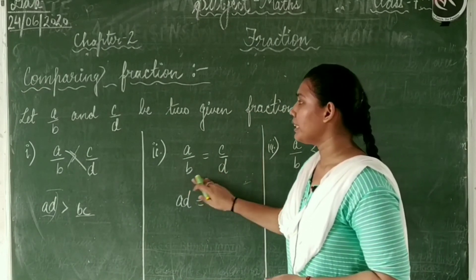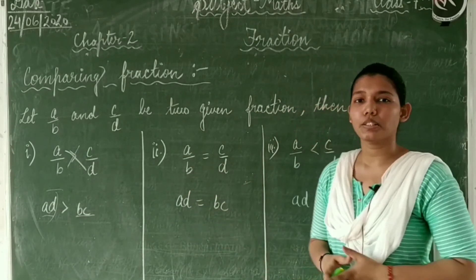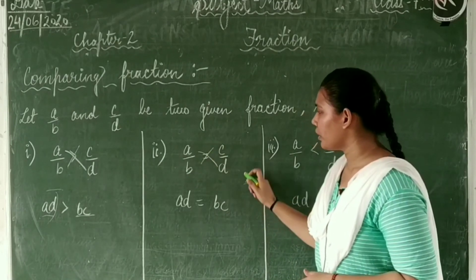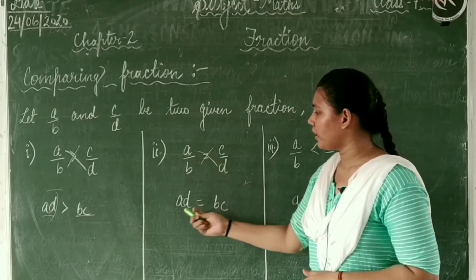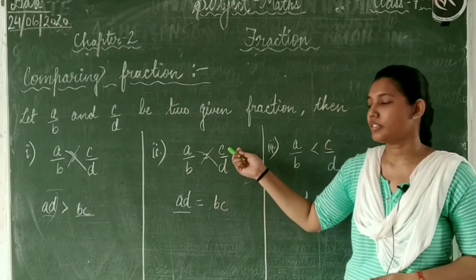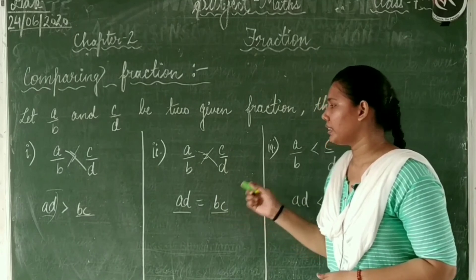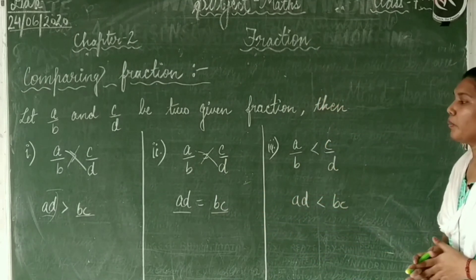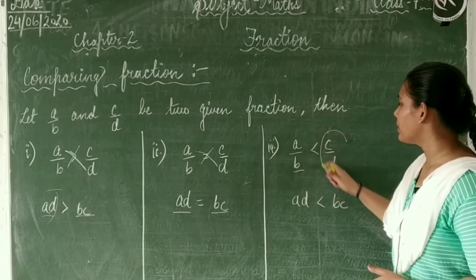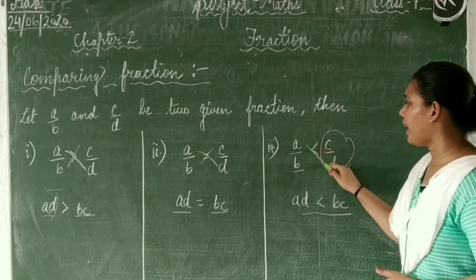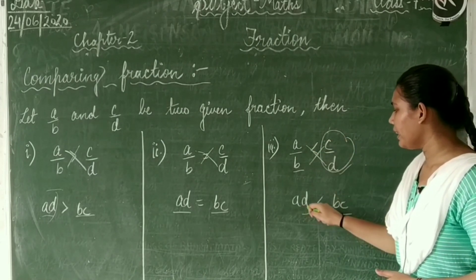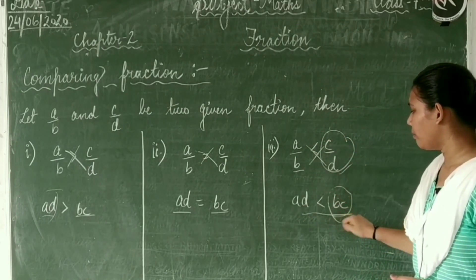For the second case, A upon B is equal to C upon D: when we cross multiply, AD equals BC. And for the third case, A upon B is smaller than C upon D: we cross multiply and the result is AD is smaller than BC.